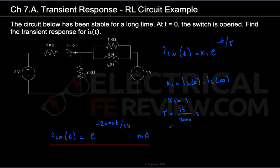Let's do a quick recap. Before time equals zero, the switch is closed and the system is stable, so the inductor is short circuited. Once we flip the switch, the current through the inductor does not change instantly — IL at 0 minus equals IL at 0 plus. After the switch is opened, the inductor turns into a current source; a capacitor would turn into a voltage source. At time equals infinity, when the switch has been open a very long time, the inductor returns to a short circuit. This is how you find the transient response in an RL circuit.